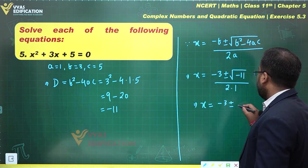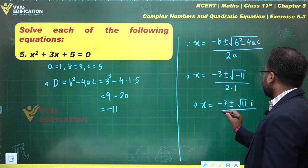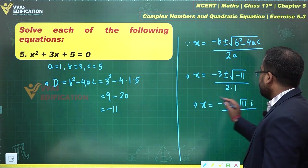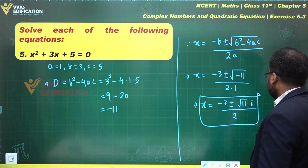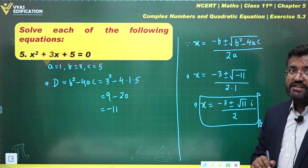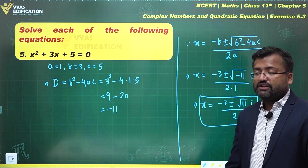Root 11 times root of minus 1, which is i, upon 2. And yes, this is the answer for this question over here. Is this the final answer? Yes, this is the final answer for this question.